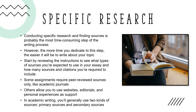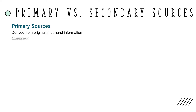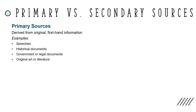In academic writing, you will generally use two kinds of sources: primary sources and secondary sources. Primary sources are derived from original, first-hand information. Some examples of primary sources are speeches, historical documents, government or legal documents, original art or literature, diary entries, letters, scientific studies, surveys, and interviews.